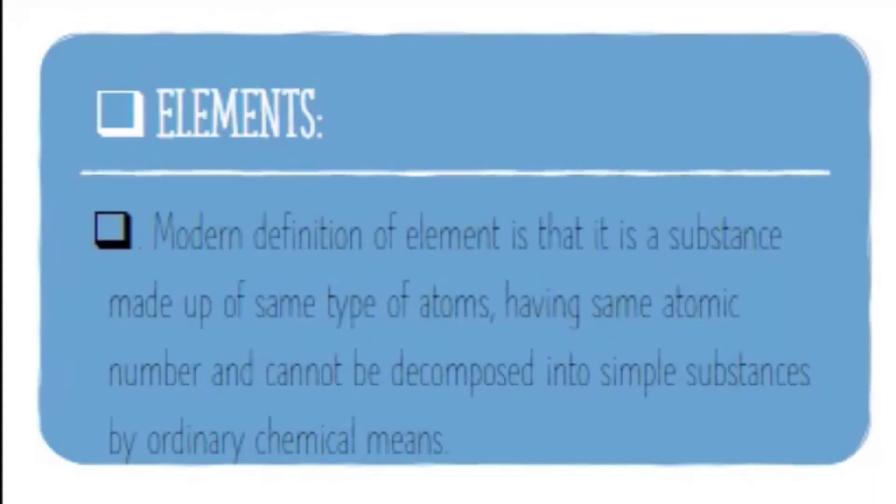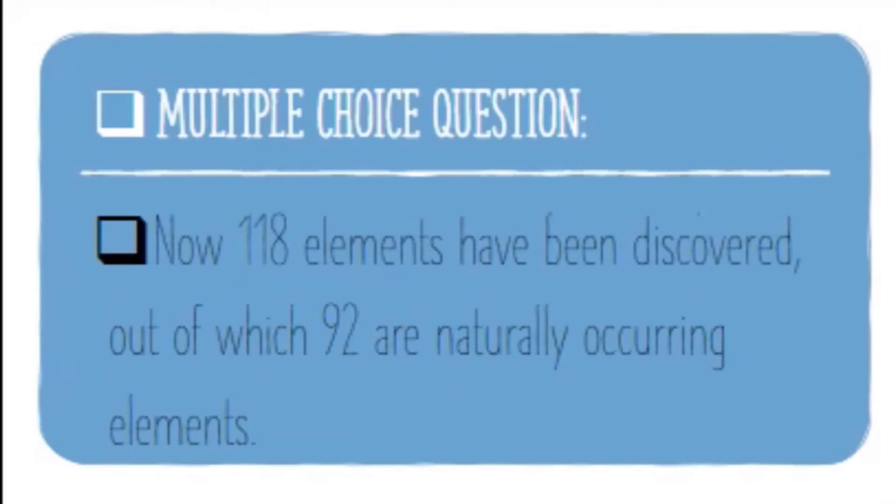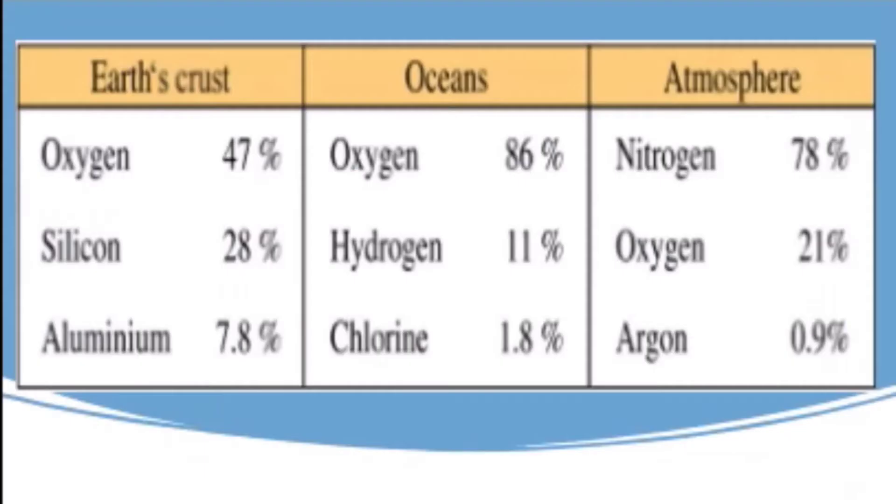For example, if we have an MCQ which will be made in the board exam, you should know that 118 elements are discovered and 92 are naturally occurring. In addition to that, there are MCQs in the table.